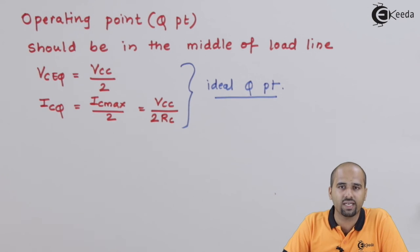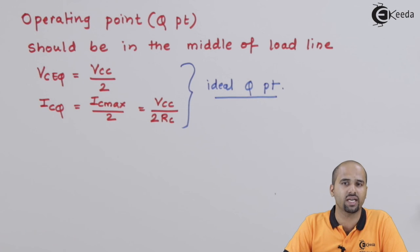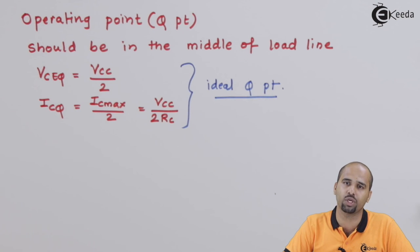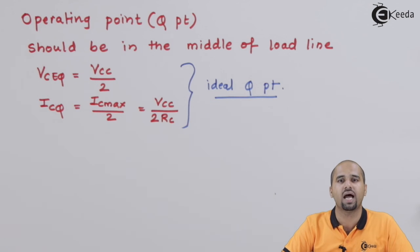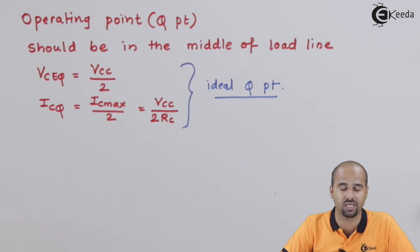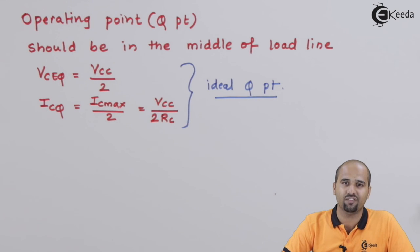As far as the load line is concerned, we have covered the entire topic of the load line concept. When we move forward for the DC analysis and AC analysis, we will take this concept further for the mathematical and conceptual operation of BJT as an amplifier. Thank you so much for watching. Don't forget to subscribe to the Ekida channel — learn more about ADC along with Ekida videos.